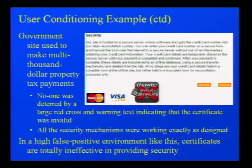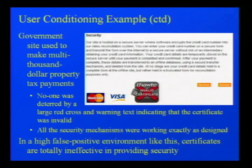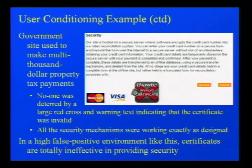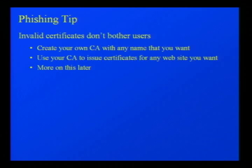A government site used for property tax payments — thousands to tens of thousands of dollars per payment — displayed a standard certificate warning with a red cross for about two months before someone told them to fix it. The security mechanisms were working exactly as intended, but the effect on users was apparently nothing. Either zero or close to zero users were deterred. So the first phishing tip: invalid certificates don't bother users.